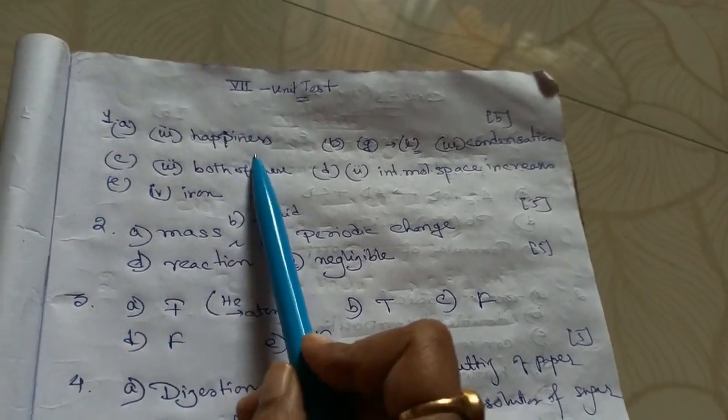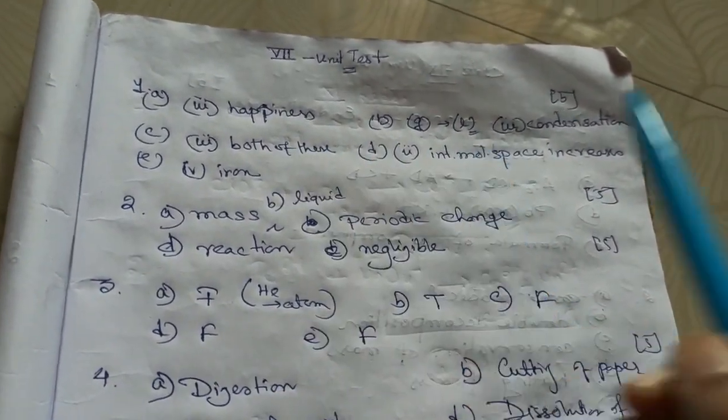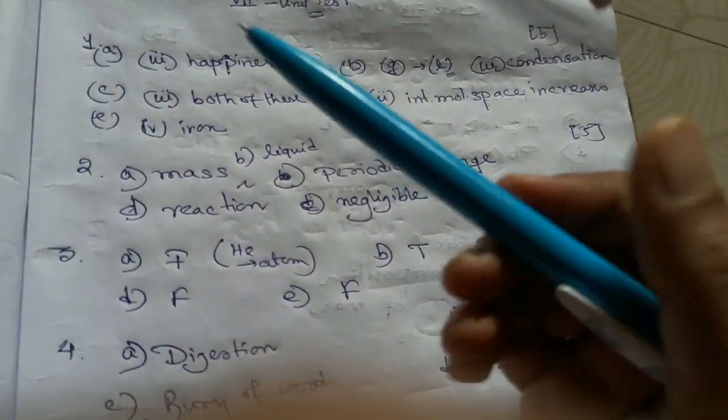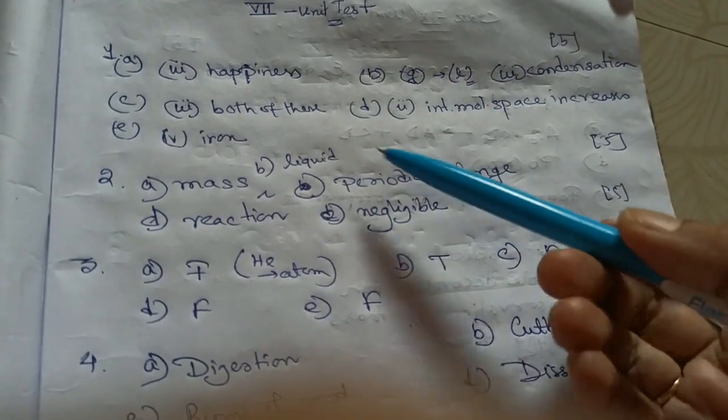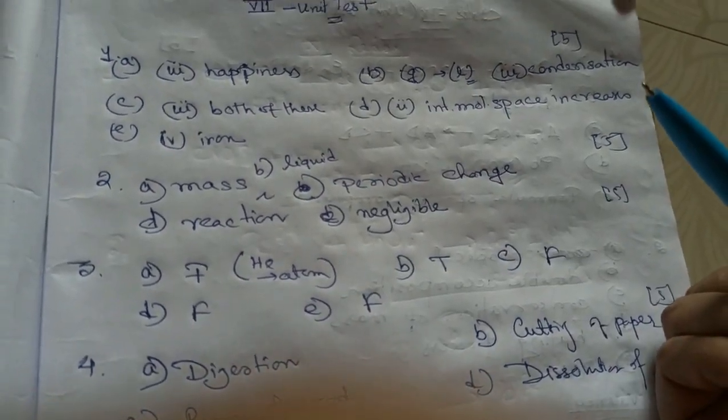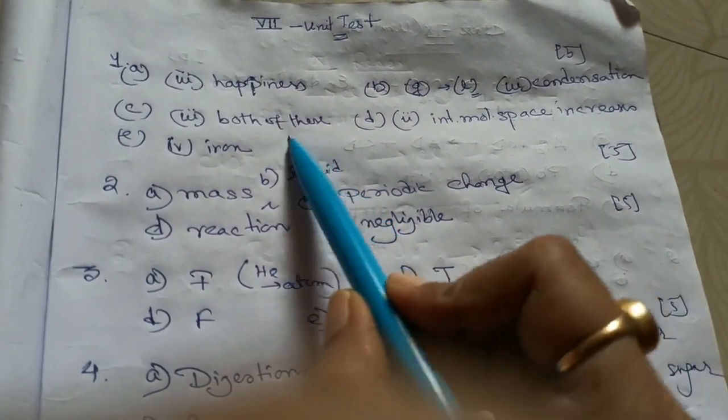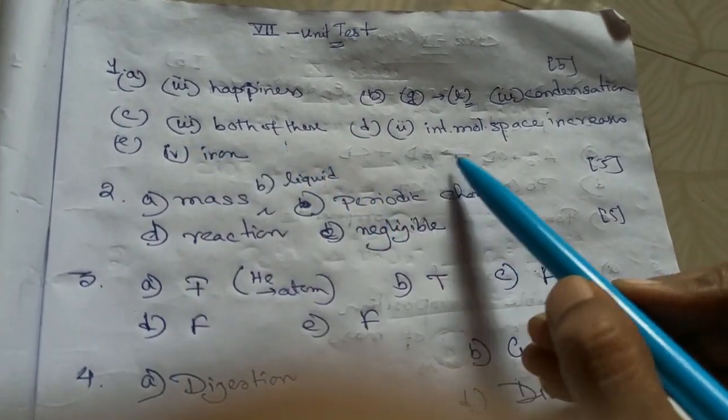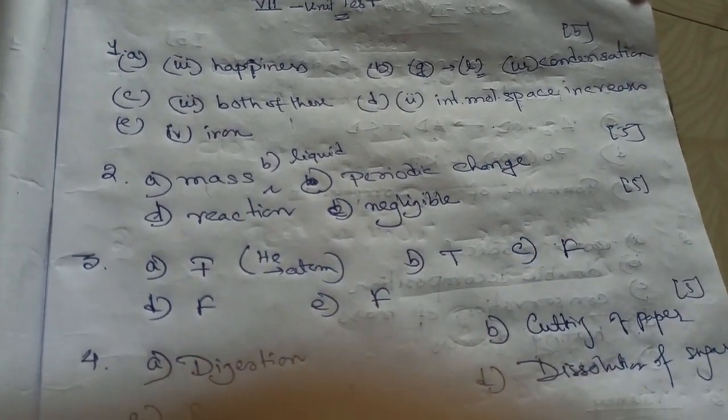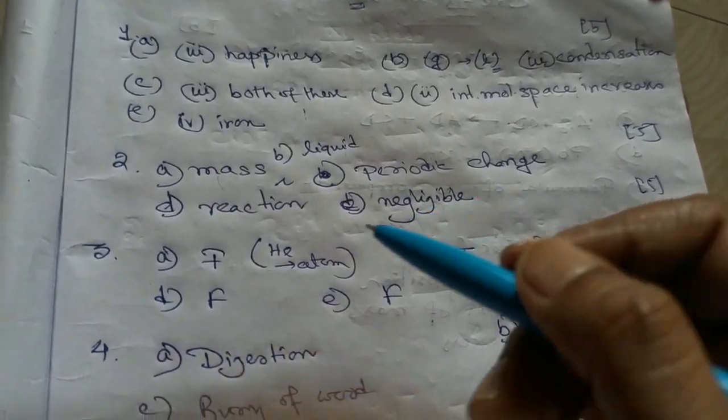The first answer is happiness which is not a matter. Second question was gas to liquid state that is condensation. Third question was about candle, burning of candle. As we know burning of candle, the physical and chemical change both occur simultaneously. So it will be both of this. Then intermolecular space increases. I think it was a boiling and third is the rusting is actually the oxide of iron.